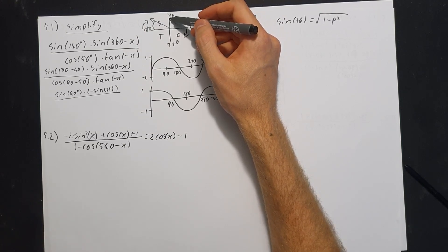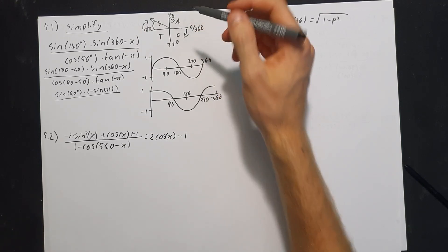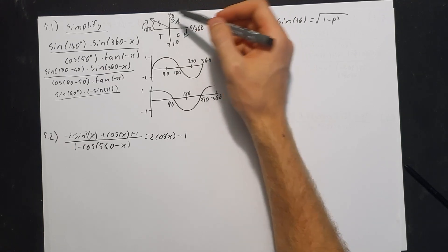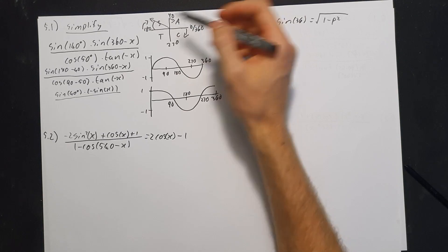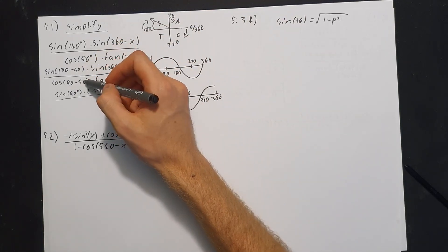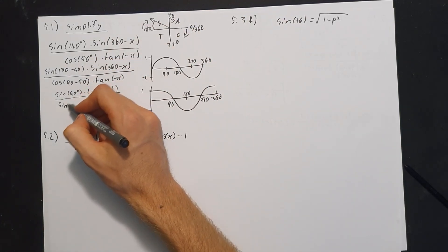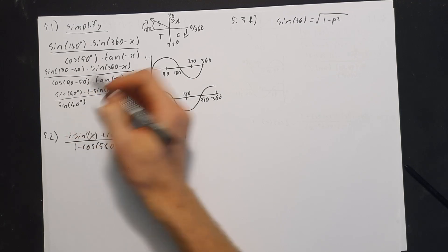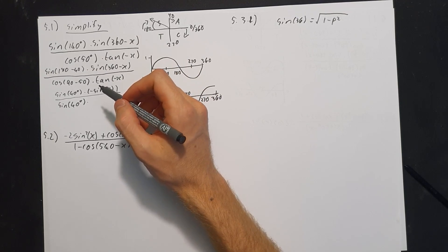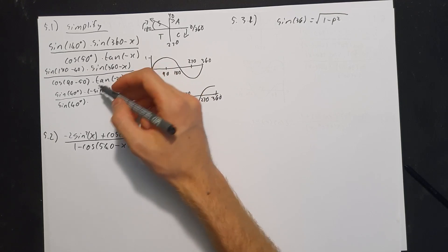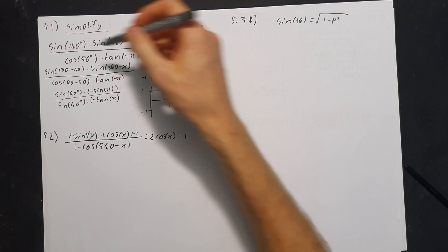For the denominator: cos of (90 minus 50) — we know the rule that cos of (90 minus θ) changes to sine of θ. So 90 minus 50 gives 40, and we get sine of 40. Then tan of negative x becomes negative tan of x.